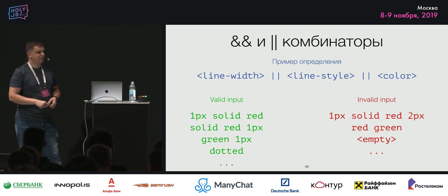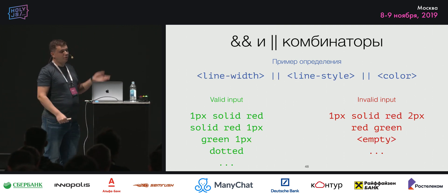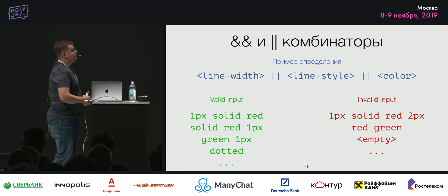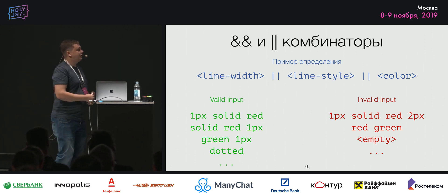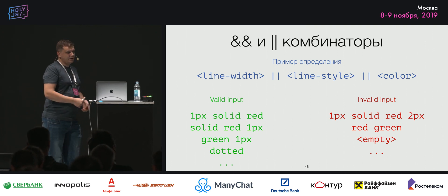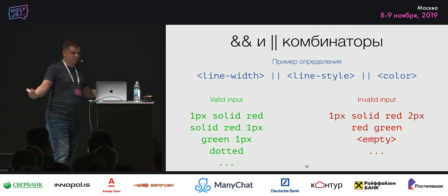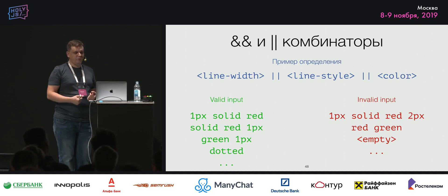С комбинатором двух вертикальных черт: мы можем взять один, два или три компонента, но не несколько раз один и тот же, не больше трёх и не пустой вход — хотя бы один компонент должен присутствовать.